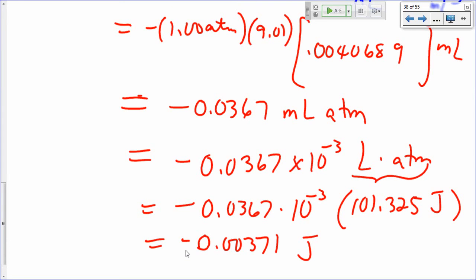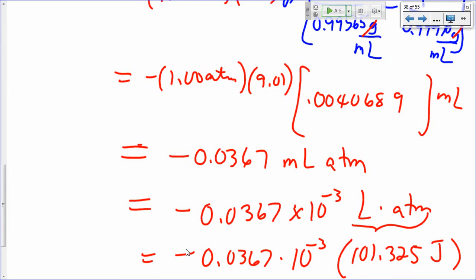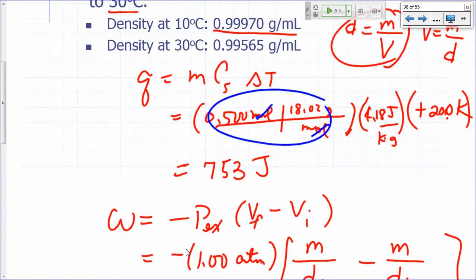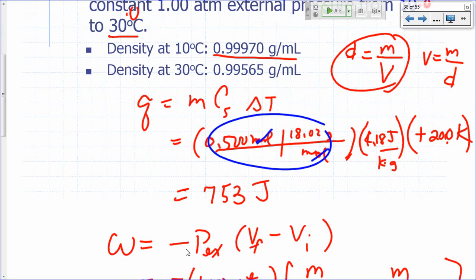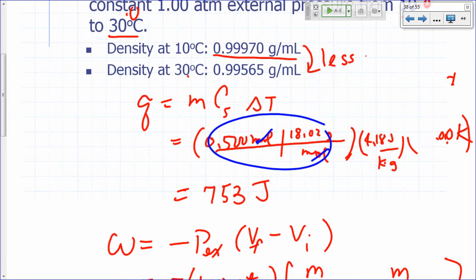So what happened there? That's a negative work. Why negative? That means the water, did it expand or contract? Negative work means expansion, right? So does that make sense? Did water expand from 10 to 30 degrees? Did it become more dense or less dense? Becomes less dense. So when something becomes less dense, that means density is mass over volume. When something becomes less dense, that means the volume has increased. Mass doesn't change.